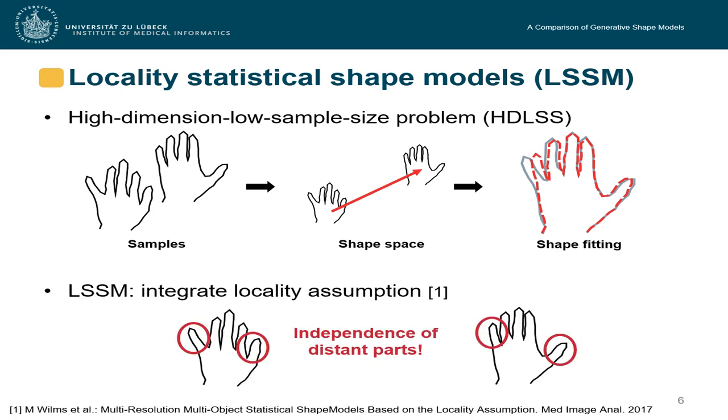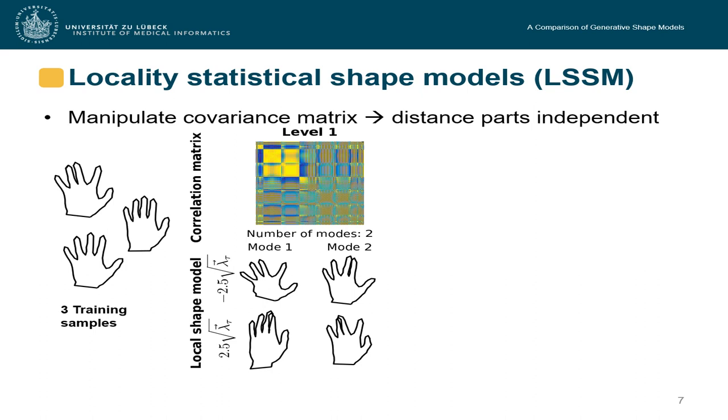An extension of the standard shape models is the locality based extension, which also considers the independence of distant parts, in this case those two fingers.